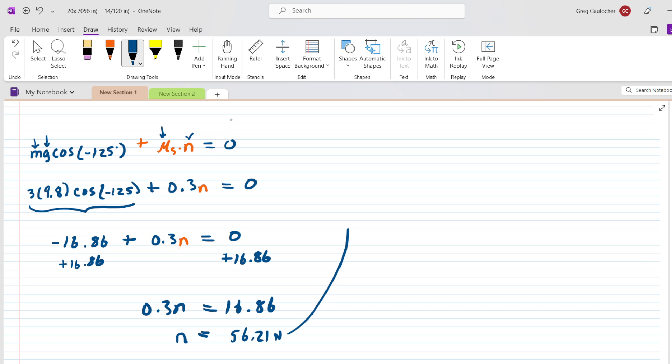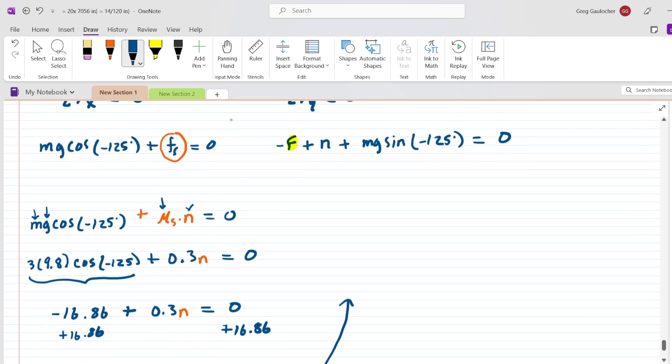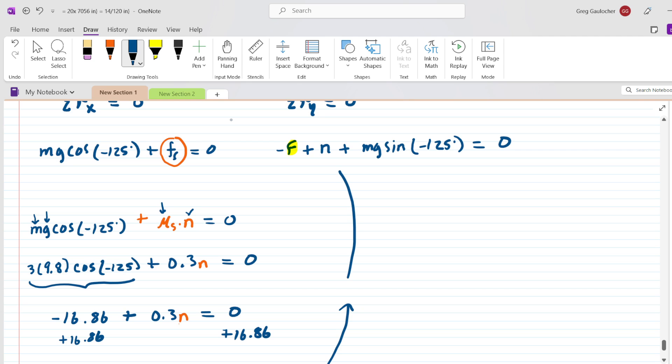Now, this is pretty nice. Because we can actually go back up to the y-direction equation. And we could substitute in the normal force that we just calculated. So, we're going to go ahead and do that. And we're also going to plug in the mass that's given. And now we'll pick up the calculator. And we'll enter this in. And that gives us negative f plus the 56.21. And then this turns out to be a minus 24.08. And now we're in business.